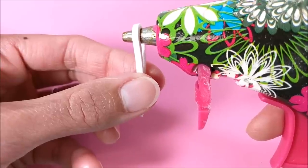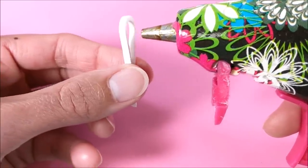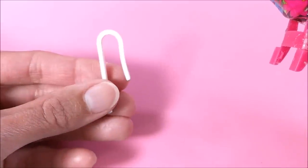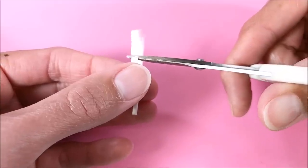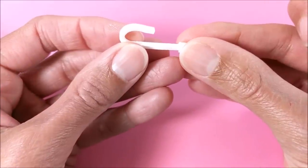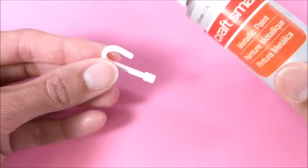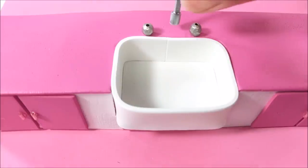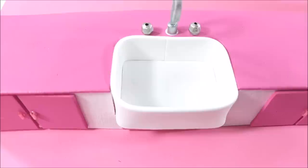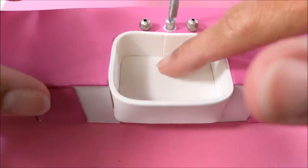I trim, then glue the bottom to a perler bead for more stability. When dry, paint silver, then glue it along with two painted beads and a drop of painted paper for the drain.